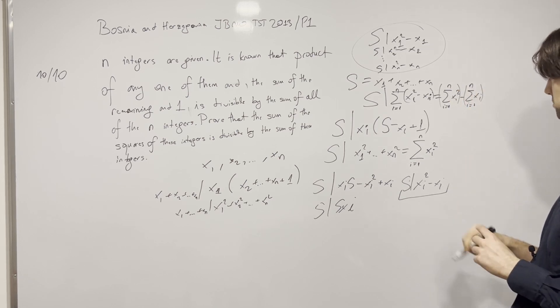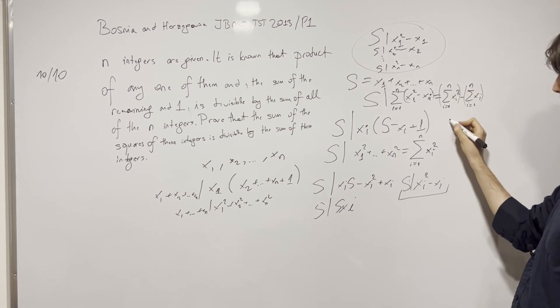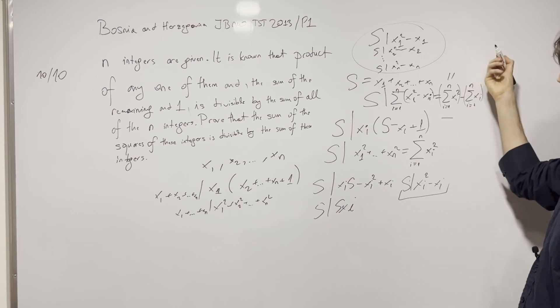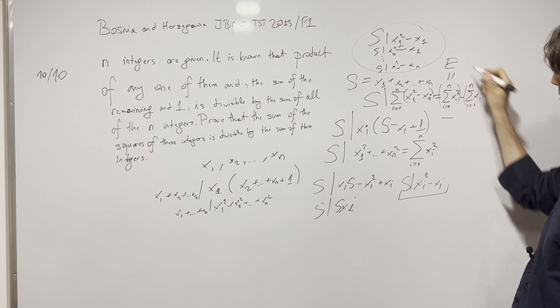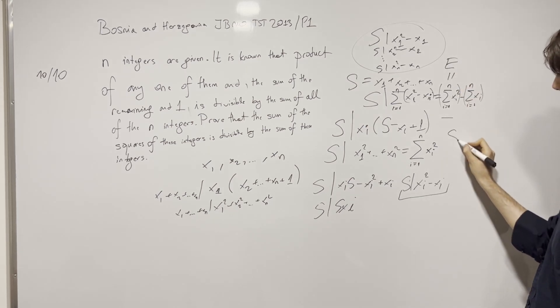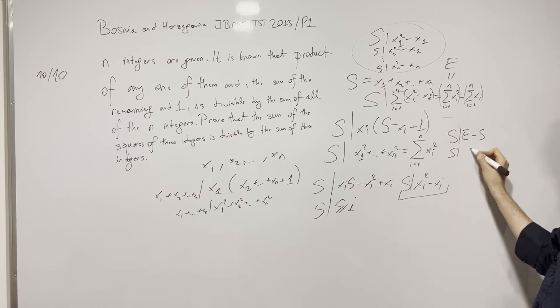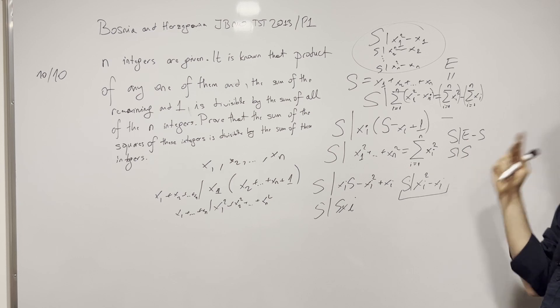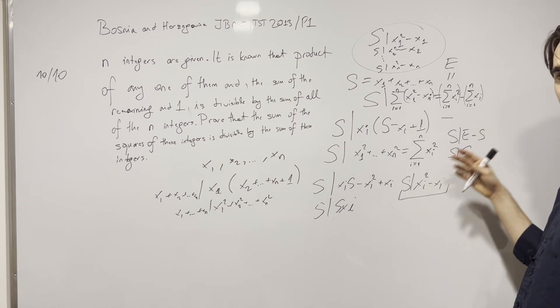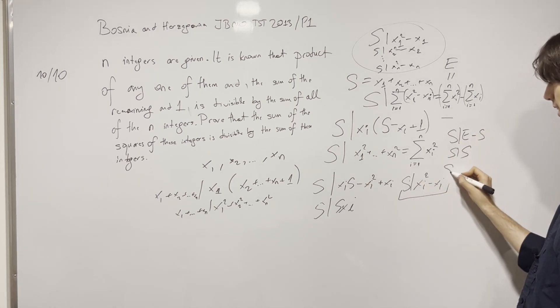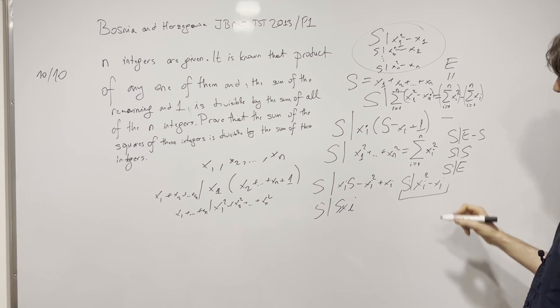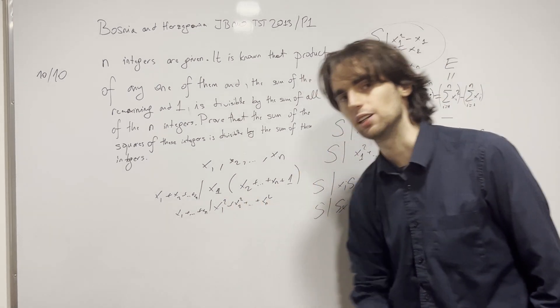And from here this is equal to, let's call the sum of the squares e. Here I get s divides e minus s. Given s divides s, what can I do? Pause for five minutes, finish it up. I can add these two together and have that the sum divides e, which is what I needed to prove.